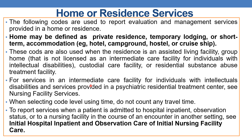These codes also apply to custodian care facilities and residential substance abuse treatment facilities. For services in an intermediate care facility for individuals with intellectual disabilities or a psychiatric residential treatment center, refer to nursing facility services. When selecting the code level using time, you should not count travel time — that is, the time to travel from the physician's place to the patient's place. To report services when a patient is admitted to hospital inpatient, observation status, or a nursing facility, see the initial hospital inpatient or observation care or initial nursing facility care services.